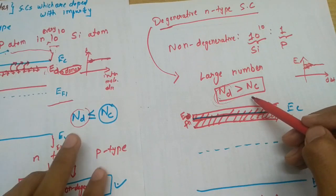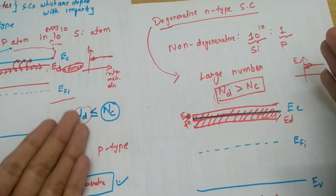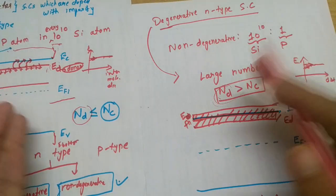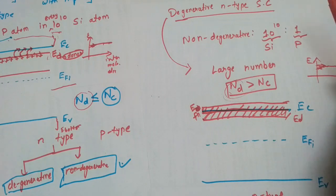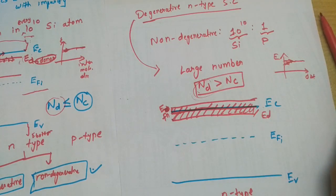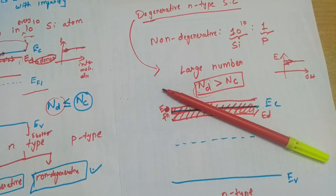So that is ND is greater than NC. Actually when ND is equal to NC it is a critical case. When it is less than, it's non-degenerative, and when it is more than, it's degenerative. That is all about degenerative and non-degenerative n-type semiconductors. In next lecture we will be discussing the same things but for p-type. Thank you.